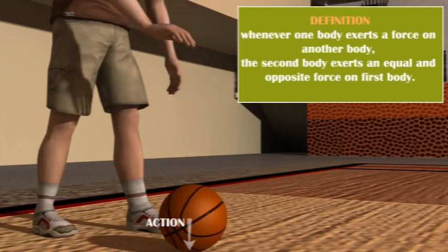In this case, basketball is exerting force on ground and ground is exerting an equal and opposite force on basketball.